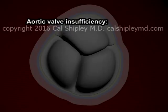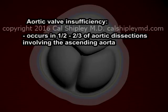This is Dr. Cal Shipley with the review of aortic valve insufficiency during aortic dissection. Acute aortic valve insufficiency occurs in one-half to two-thirds of aortic dissections involving the ascending aorta, and so it is important for clinicians to be on the lookout for this potentially very serious complication.